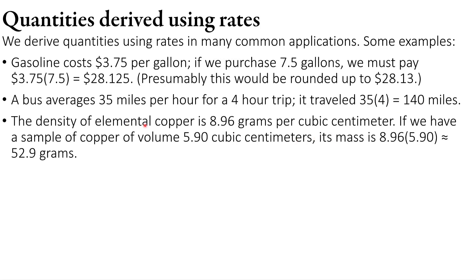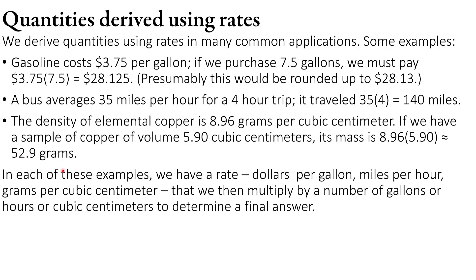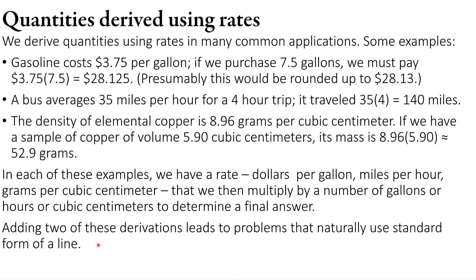The density of elemental copper is 8.96 grams per cubic centimeter — that's another rate. If we have a sample of copper with volume 5.90 cubic centimeters, we multiply 8.96 grams per cubic centimeter times 5.90 cubic centimeters, which gives around 59.2 grams of copper. In all of these we have a rate — dollars per gallon, miles per hour, grams per cubic centimeter — rate something per something. We multiply by a number of gallons, hours, or cubic centimeters to determine a final quantity. If we add two of these derivations, we get standard form lines. Let's look at two examples.